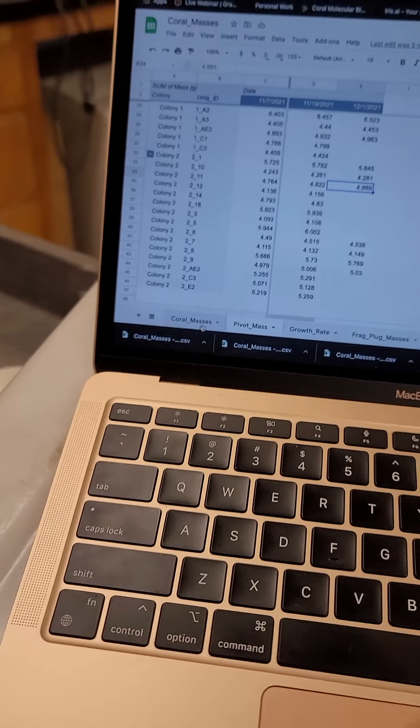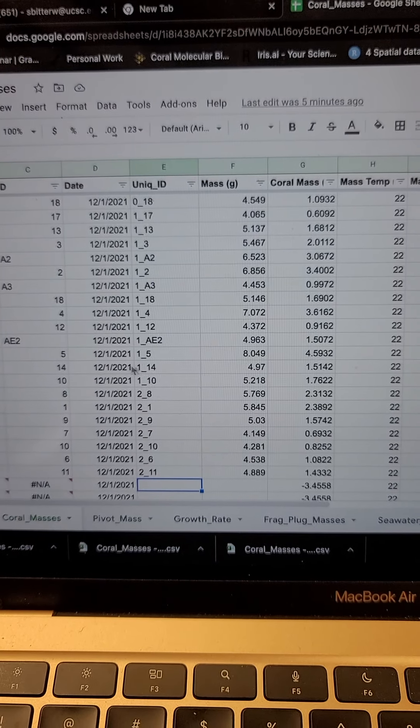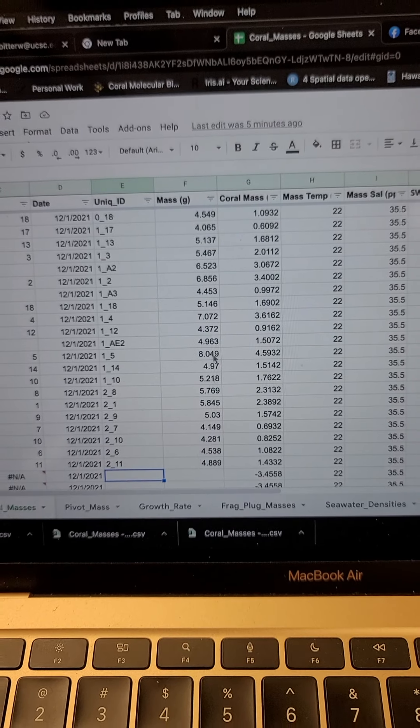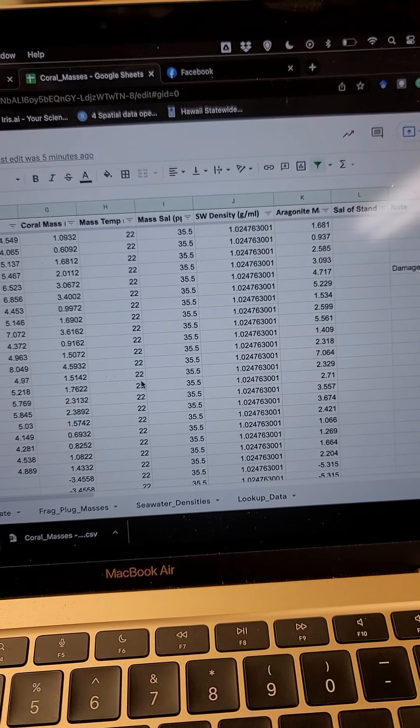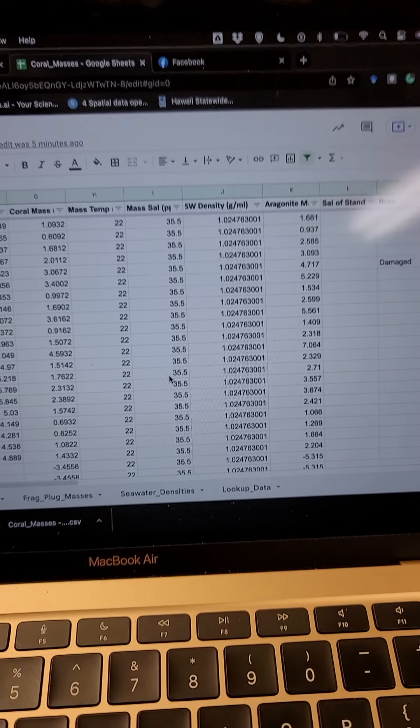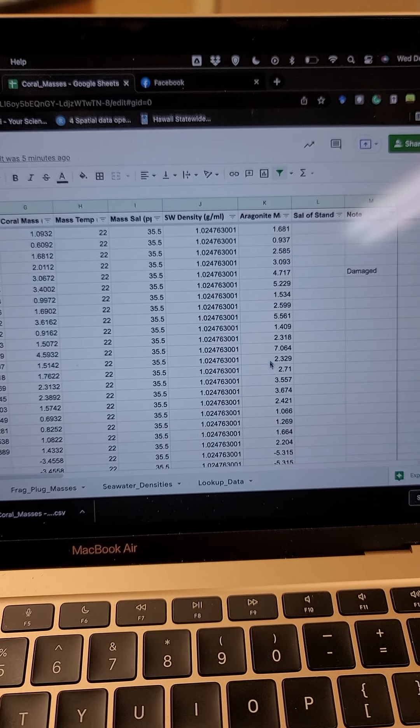So I just use a spreadsheet on Google Sheets. I've got different information here, like the date, the unique identification number, the mass. And then from the mass, as well as the temperature of the water and the salinity, you can calculate the density of seawater and from that determine the aragonite mass.